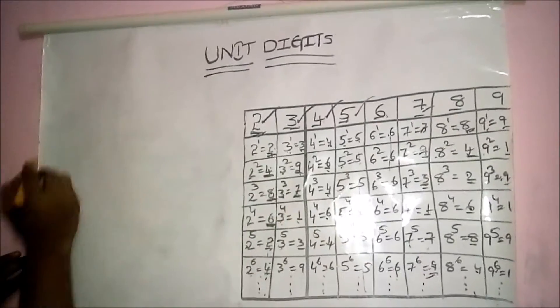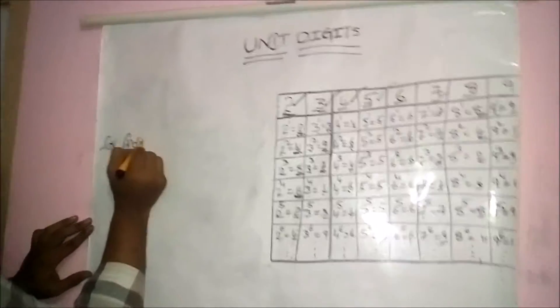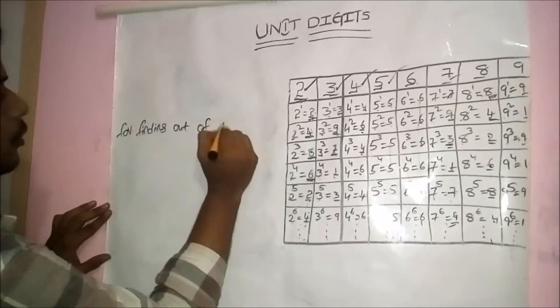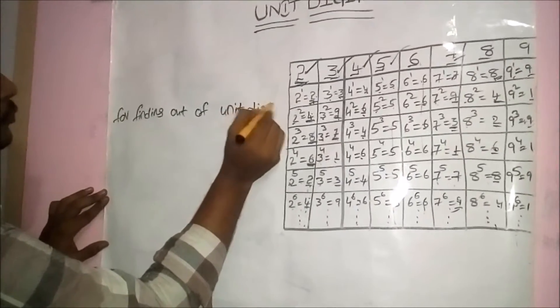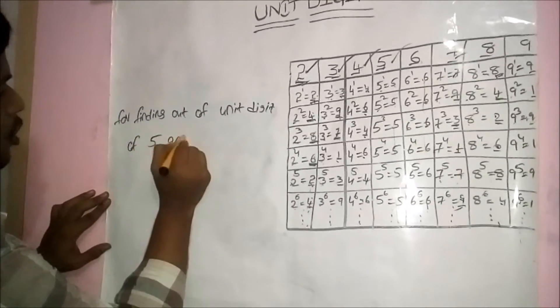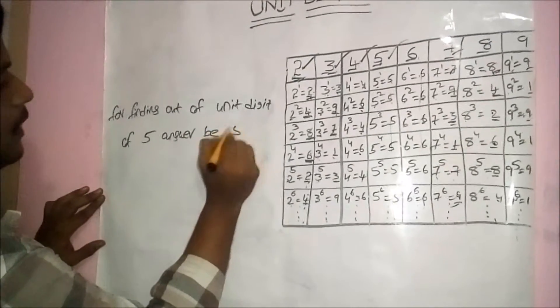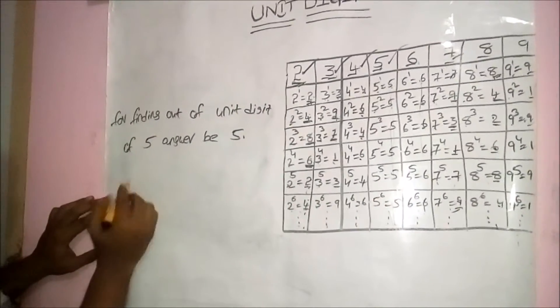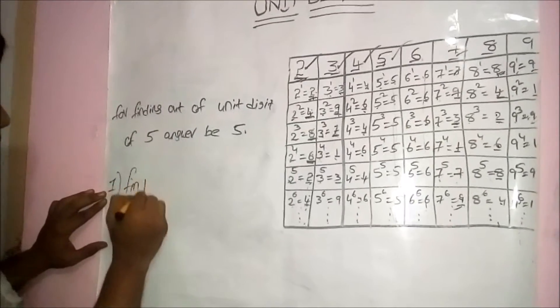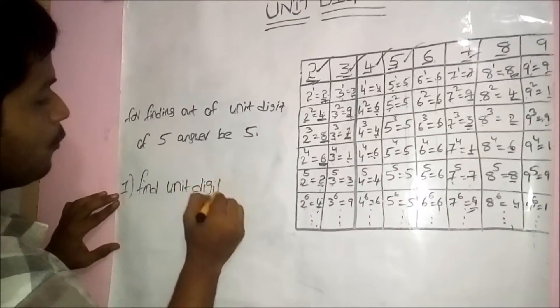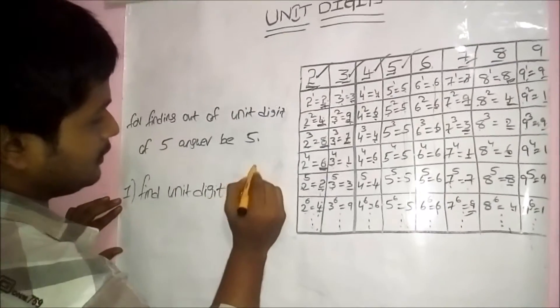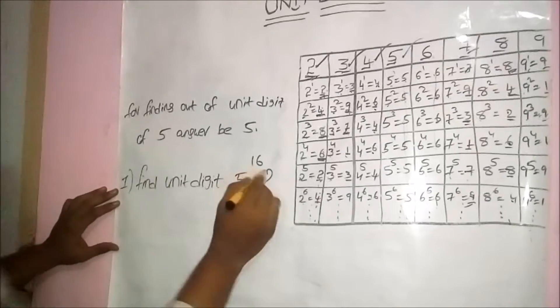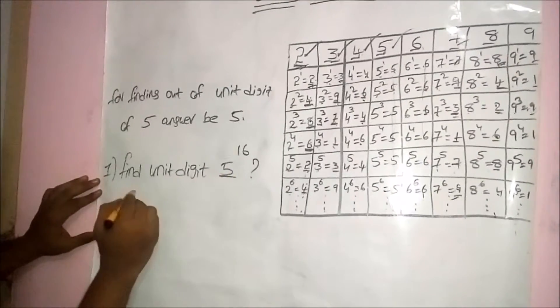For base 5: the unit digit is always 5, because according to the table the unit digit never changes at any position. For example, find the unit digit of 5 power 60 — whatever the exponent, if the base is 5 the answer is always 5.